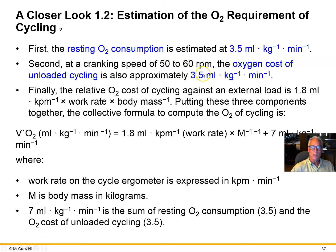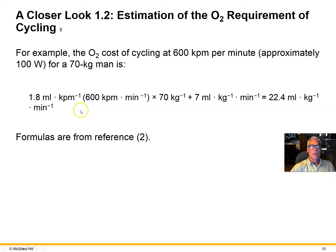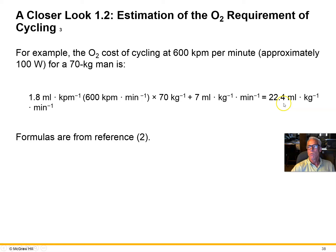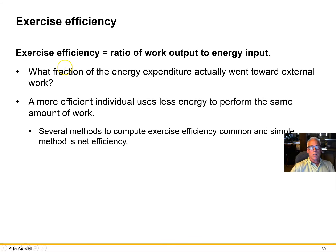Here's the cycling calculation. The resting oxygen consumption is 3.5 mL/kg/min, and unloaded cycling between 50 and 60 RPM is also about 3.5 mL/kg/min, so we add those for 7 mL/kg/min. For a specific example with a work rate of 1.8 mL/kgm (kilogram-meters per minute), we insert that into the formula and add the 7 mL/kg/min to find that 600 kgm/min cycling requires 22.4 mL of oxygen per kilogram per minute.